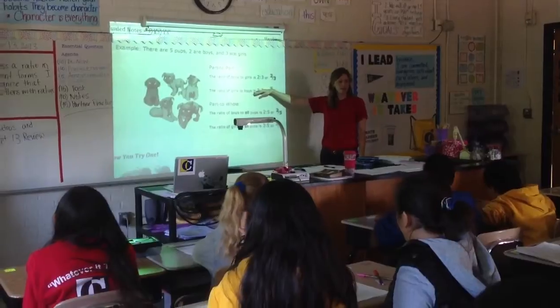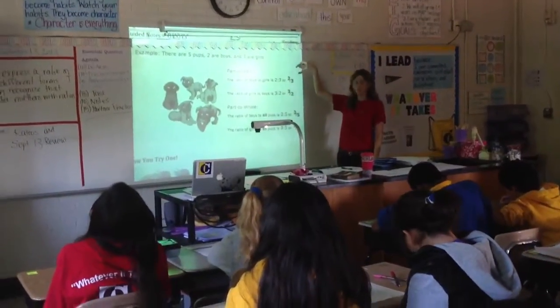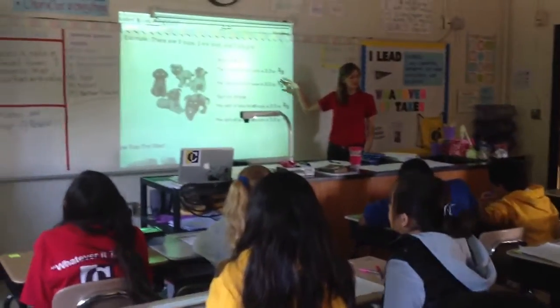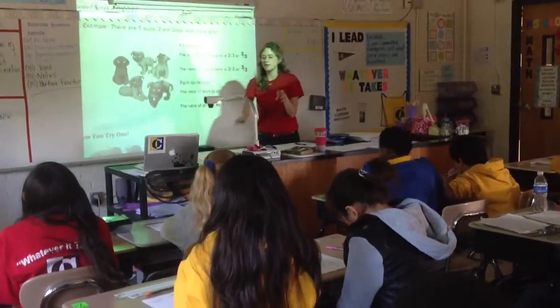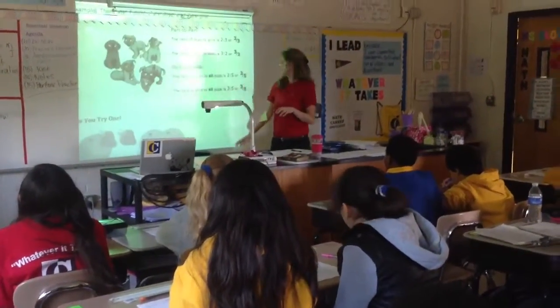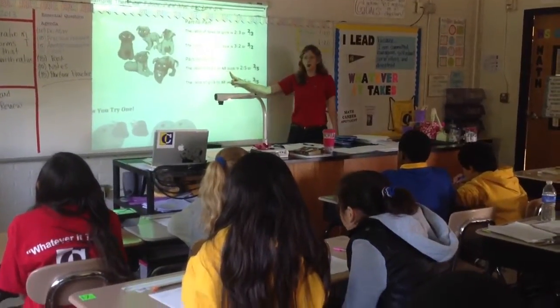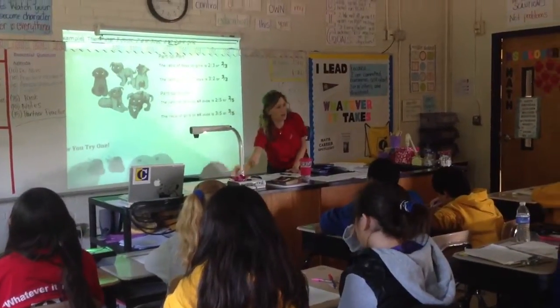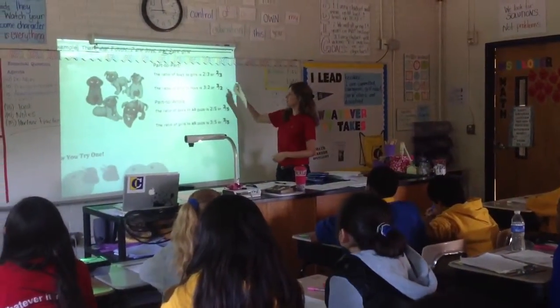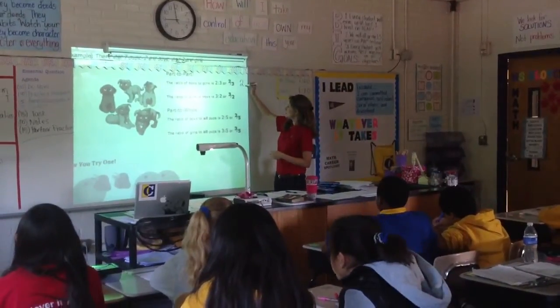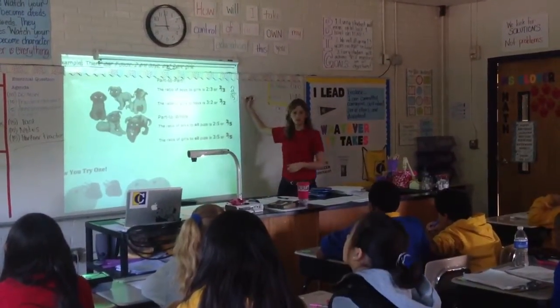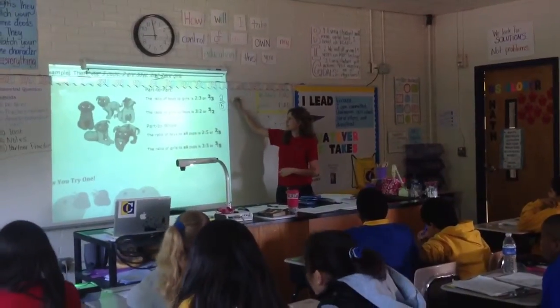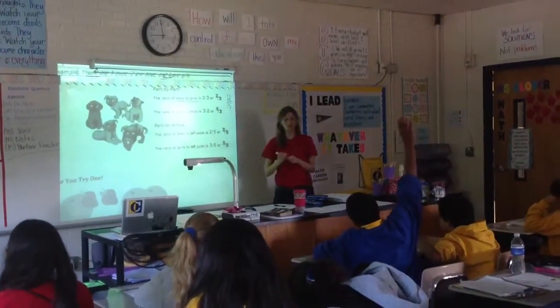So, this is a part-to-part ratio. They're comparing the boys to the girls and the girls to the boys — those are parts to parts. If we're comparing part to whole, that's like saying the ratio of boys to all puppies. I saw some of us yesterday, when we were doing part to part and I said boys to girls, trying to do the boys over all of them. Now, why would that not be correct for boys to girls? Let's try.